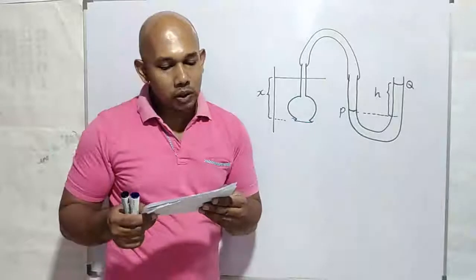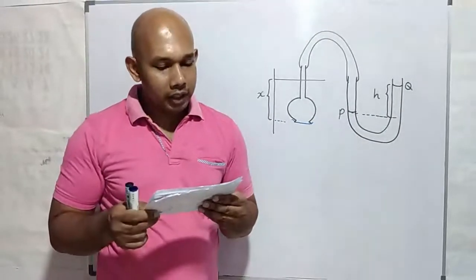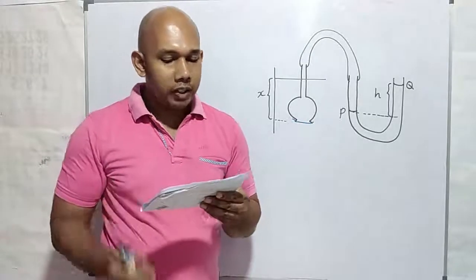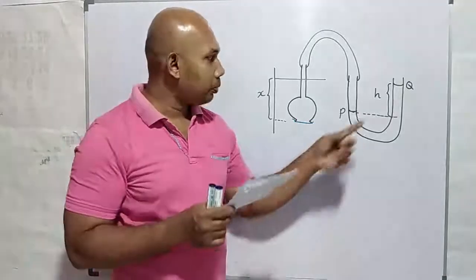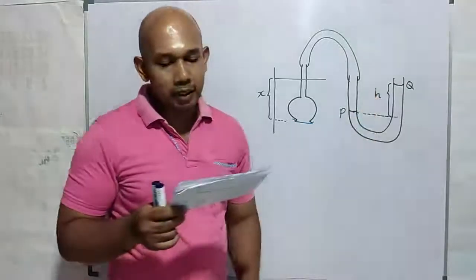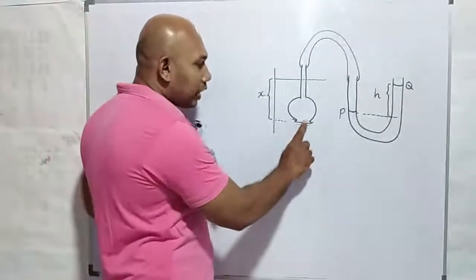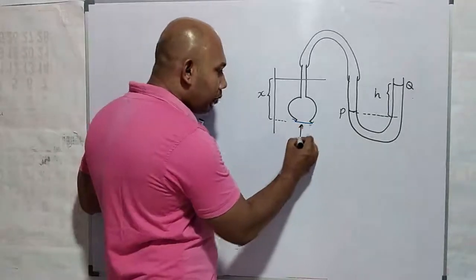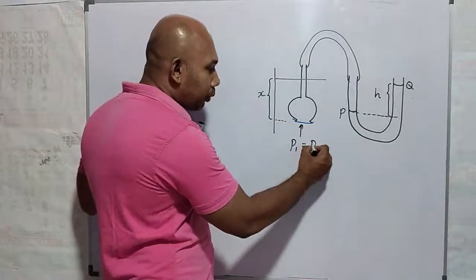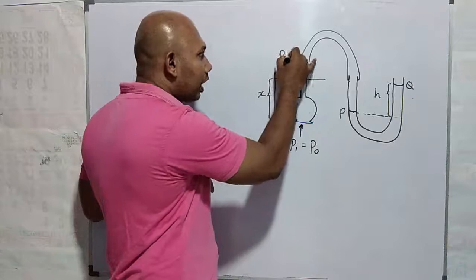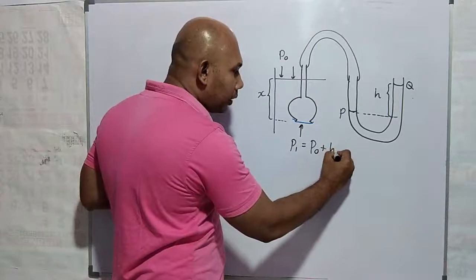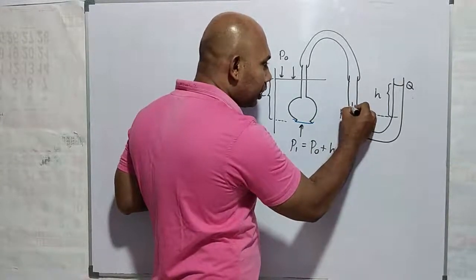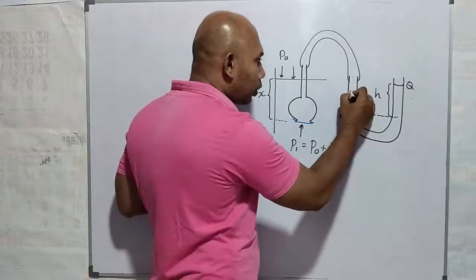Question number one: The diagram shows the apparatus set up to study the factors affecting the pressure of a liquid. When the thistle funnel is dipped to a depth X in water, the difference between the two liquid levels in the U-tube is H. The theory: inside pressure is equal to the pressure exerted on the balloon membrane. The total pressure, P1, is equal to the atmospheric pressure exerted on the liquid surface, plus the pressure exerted by the liquid column, HρG. The inside pressure equals the pressure at the P side of the U-tube, which is also equal to P1.